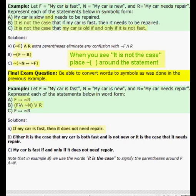In part B we have a compound statement and then compounded with another statement. The first part is F and negation of N. My car is fast and it is not new. Then we have OR which is the V. My car needs repair because R represents my car needs repair.